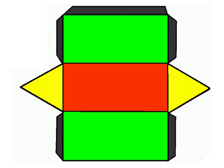Here we have another example of a net. We have three rectangles here in the middle, and two triangles on either side. Pause the video and think about what kind of prism this net might make.